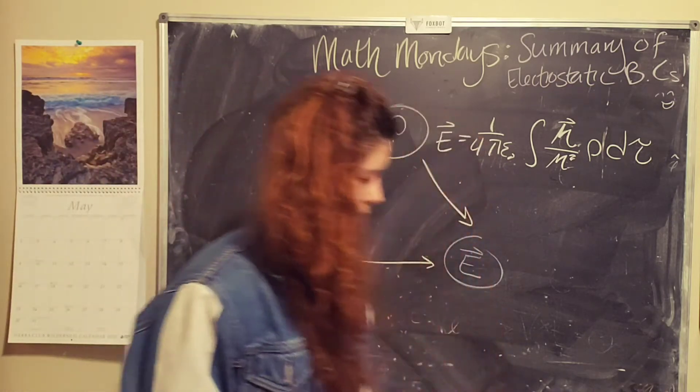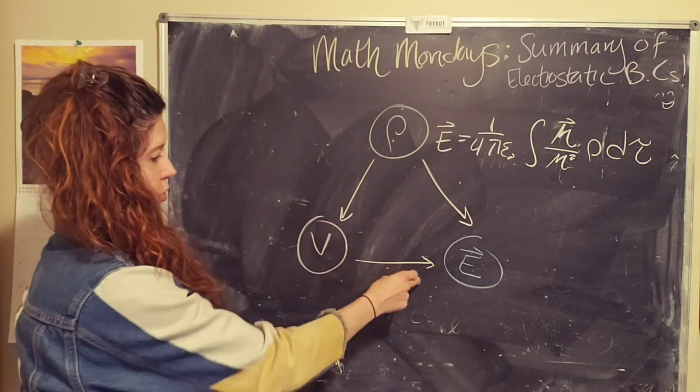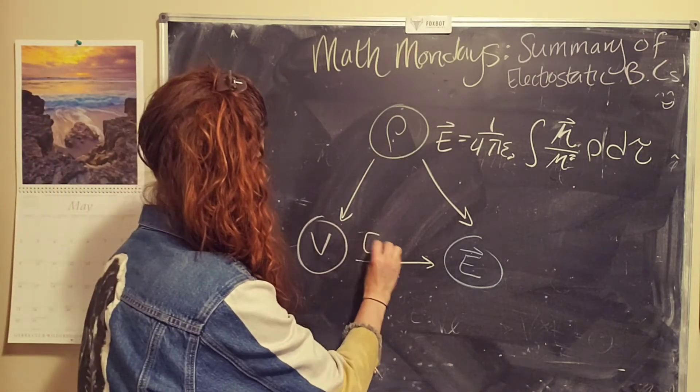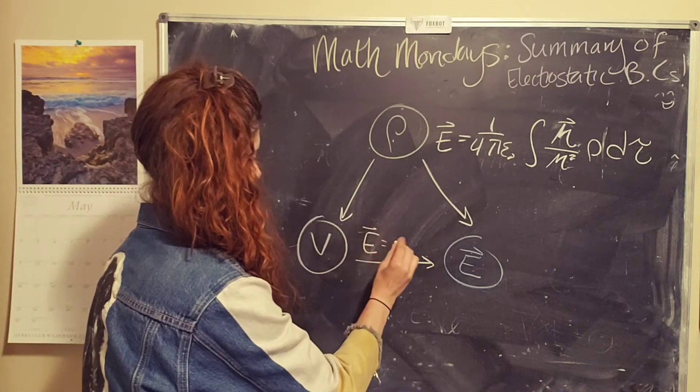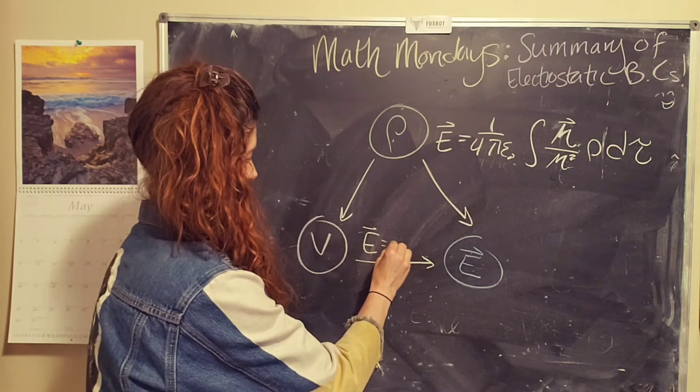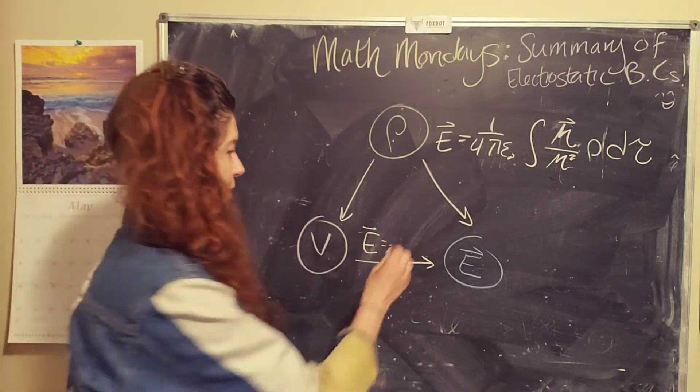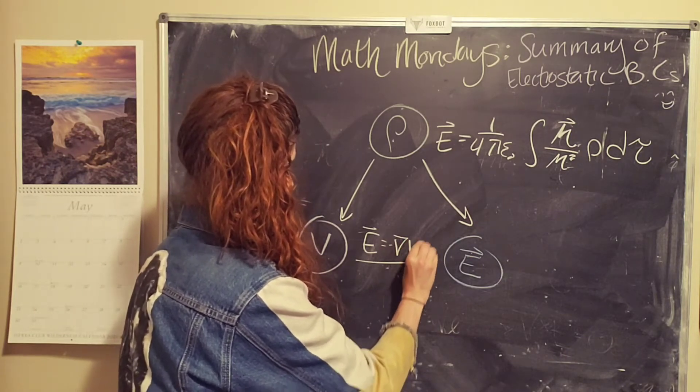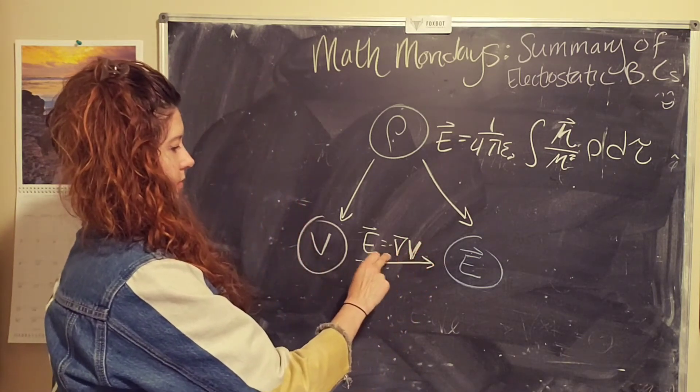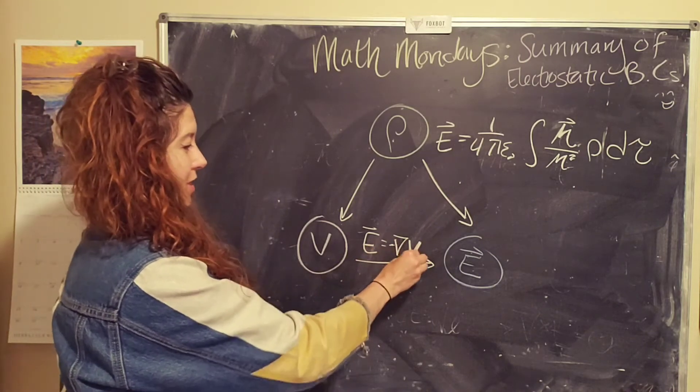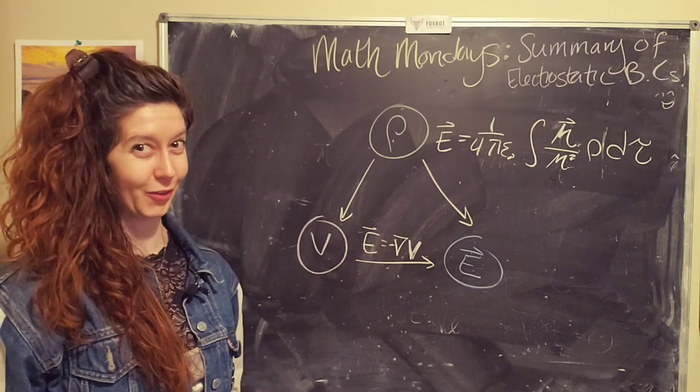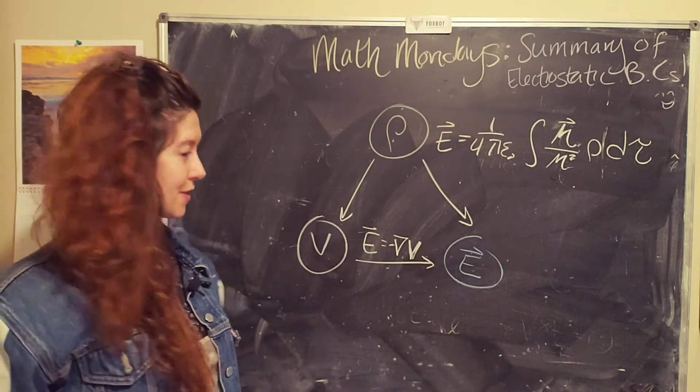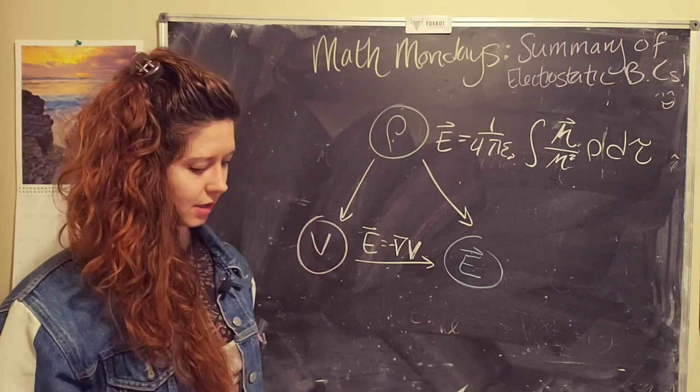So the equations to go from the charge distribution to the electric field, well, we just did this one. So you have the electric field is, I guess I should say the electric potential is defined as the divergence, the electric field equals the negative divergence of the scalar electric potential. There we go. Okay, trying to be very careful in math and physics. You have to be careful about the words that you use.